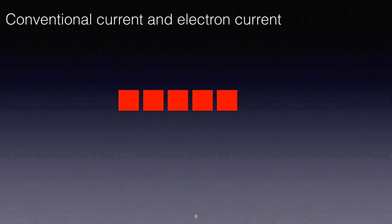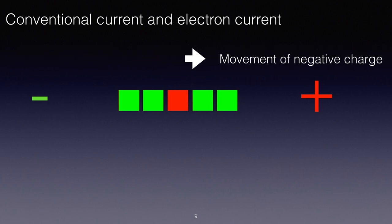we can see then that the electrons are pulled towards the positive and this is the movement of negative charge. But at the same time, the black square, which was on the right of the diagram, has moved to the left.